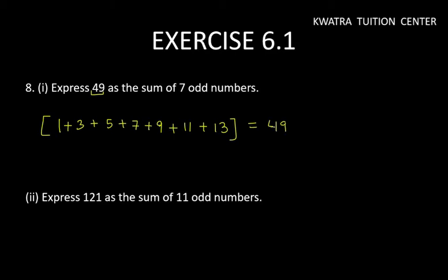Now we have to express 121 as the sum of 11 odd numbers. 1, 3 plus 5 plus 7 plus 9 plus 11 plus 13 plus 15 plus 17 plus 19 plus 21.